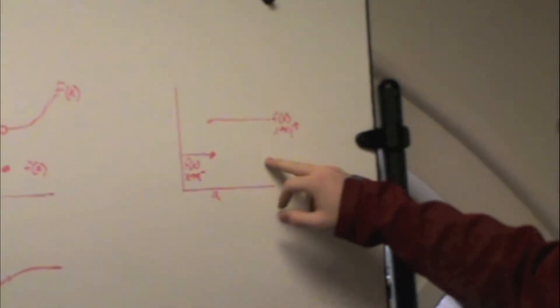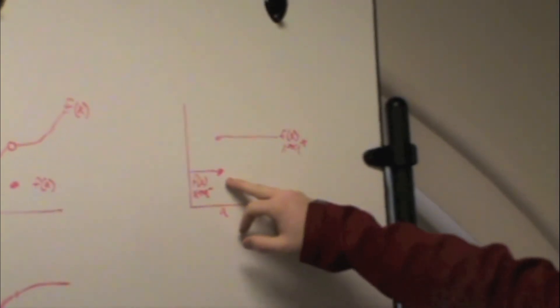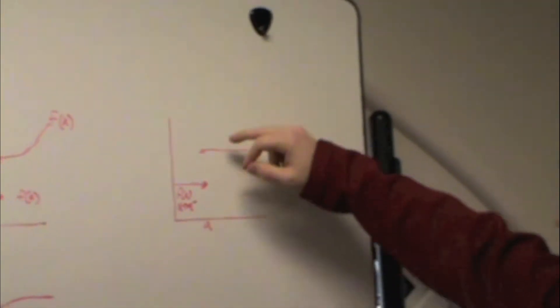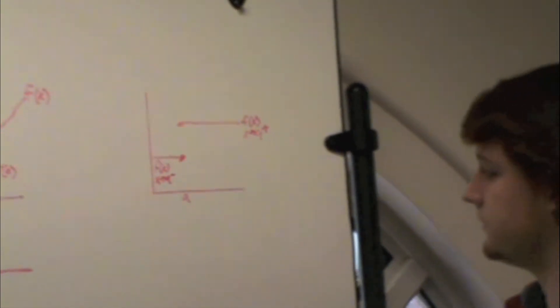This one you can rule out because the limit as x approaches from the left is here, while x approaches from the right is here. And so the limit as x approaches from the left does not equal from the right.